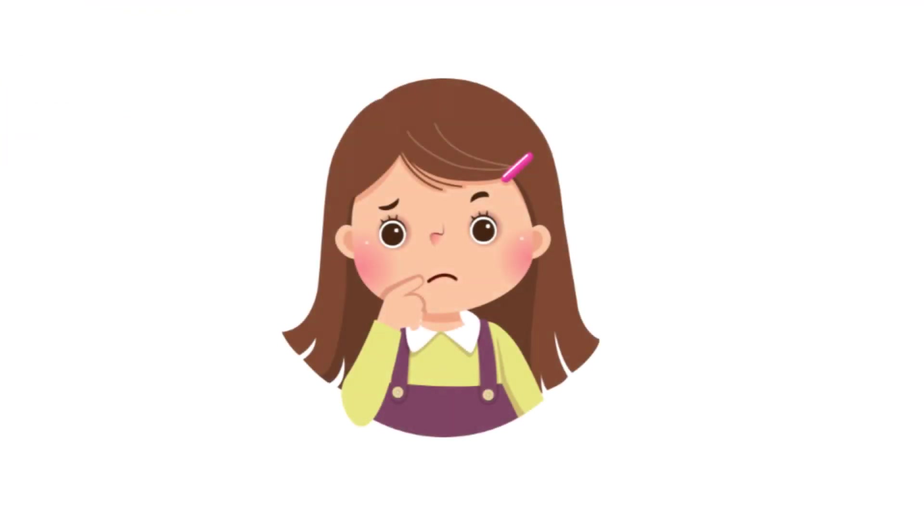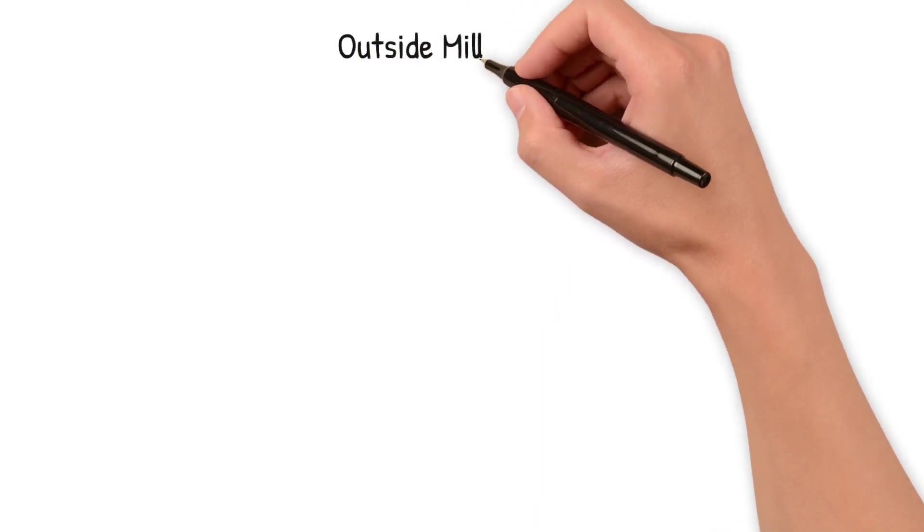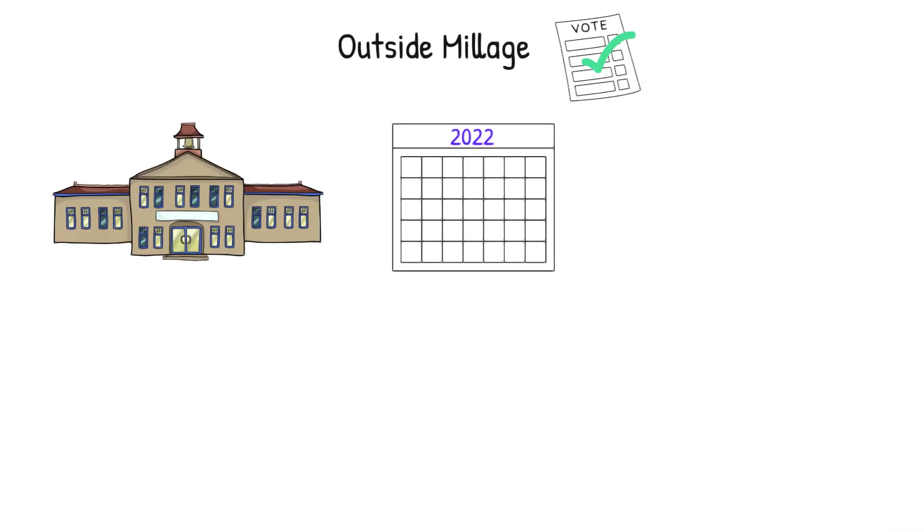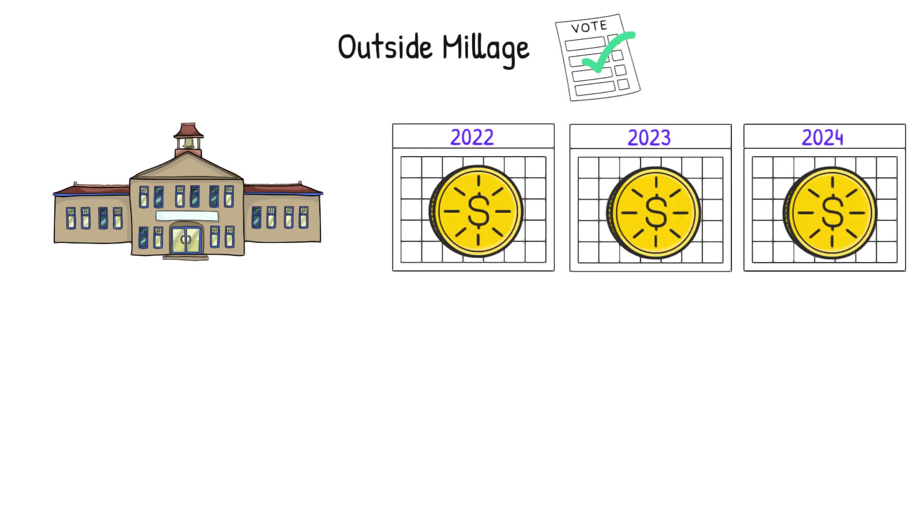This is tough to understand. It really gave me a headache. The simplest way I can explain it is that the bill talks about outside millage, or the mills that the voters approve. It makes sure that our local government, which includes Lakota, receives the same amount of money from the property taxes that they did last year.